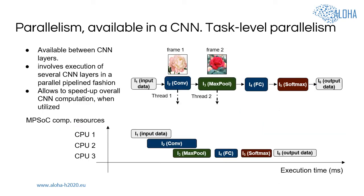Another type of parallelism available in a CNN is task-level parallelism. It involves execution of several CNN layers in parallel pipeline fashion. The pipeline parallelism is related to the streaming nature of CNN applications, where input data comes as a stream of input frames. As shown on this slide, with several processors available in the platform, several CNN layers can be executed in parallel as they perform computations over different input frames. Exploitation of task-level parallelism allows to speed up the overall CNN computation.